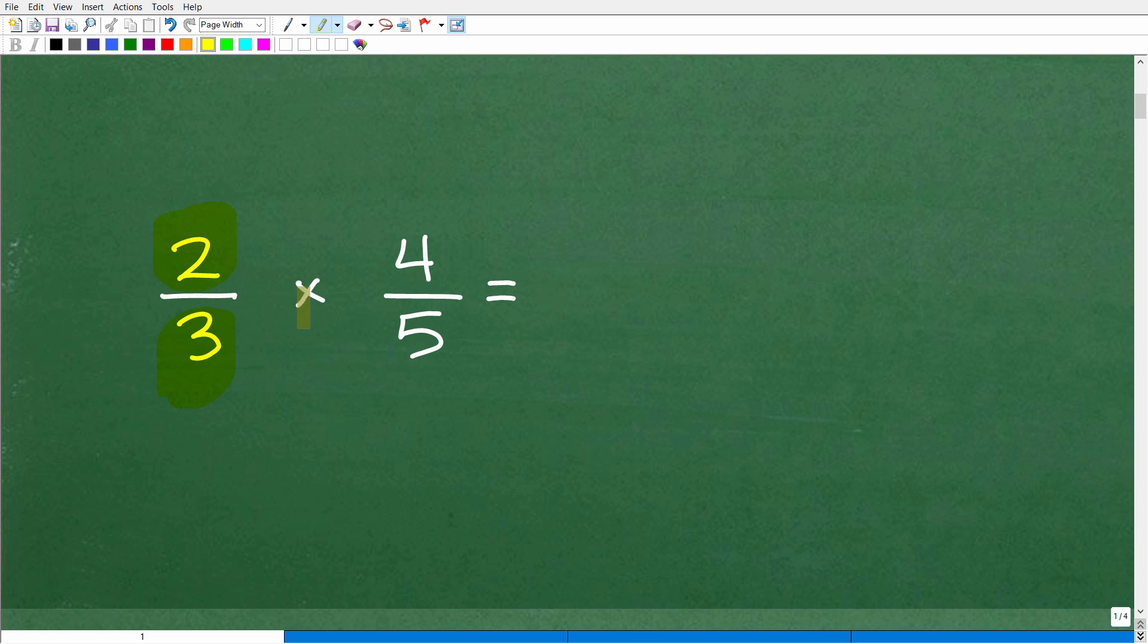So in this particular fraction, two is the numerator, three is the denominator. Over here, four is the numerator, and five is the denominator. So the way we multiply fractions is we simply multiply the respective numerators and the respective denominators. So in this case, we're going to multiply two and four, so that'll be two times four over three times five. So you can see here, I'll multiply the numerators over the denominators, and when I do this, I'm going to get my answer. So two times four is, of course, eight, and then we have three times five is 15. And that is the final answer.